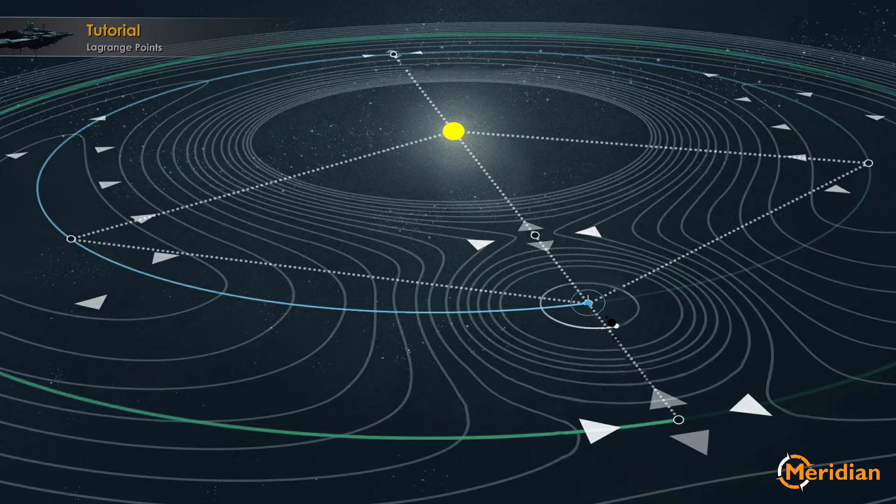And now, the first Lagrange point is located at this spot. It's between the Sun and the planet, but it's closer located to the planet.